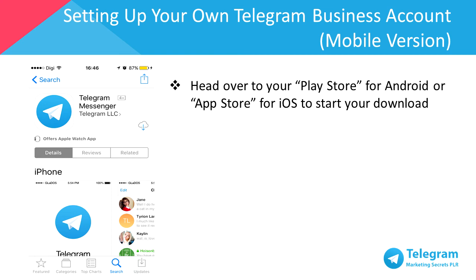First, you'll need to download the Telegram app to your mobile phone to sync your contacts before proceeding with the desktop version. To do this, head over to the Play Store for Android or the App Store for iOS to download Telegram.